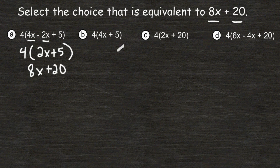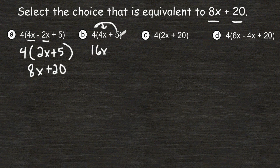But just to make sure, let's simplify the other expressions as well so we can eliminate those choices. 4 times 4x is 16x, and 4 times 5 equals 20. So choice B is 16x + 20, which is not equivalent to 8x + 20.